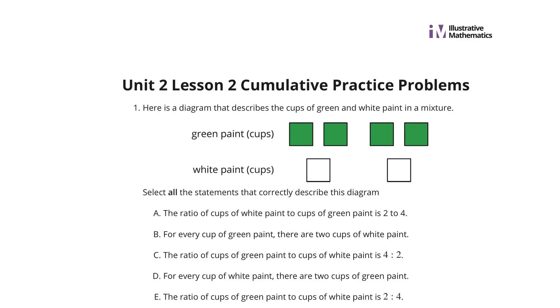Hi, Mr. Richards here. Today's grade 6, unit 2, lesson 2, practice problems review is on representing ratios with diagrams. In problem 1, here is a diagram that describes the cups of green and white paint in a mixture. Select all the statements that correctly describe the diagram. A, the ratio of cups of white paint to cups of green paint is 2 to 4. Well, we have 2 cups of white paint and 4 cups of green paint, so A is true.